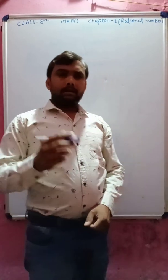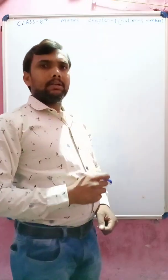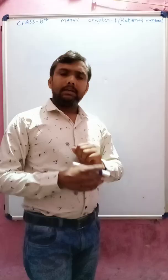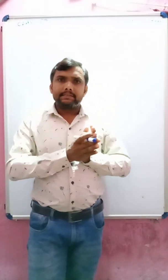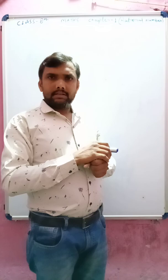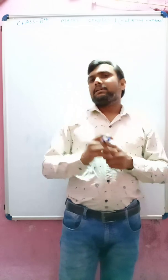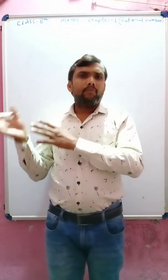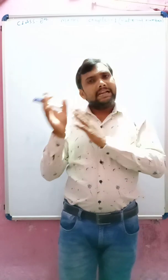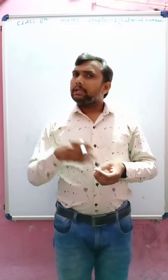Good morning students. Now we start Chapter 1: Rational Numbers, Class 8 Mathematics. Before starting the exercise, we talk about something about the different kinds of numbers. Natural numbers are the numbers starting from 1, 2, 3, 4, 5 and so on. This is called a natural number and is denoted by capital N.